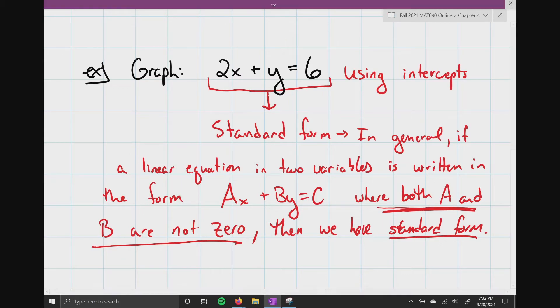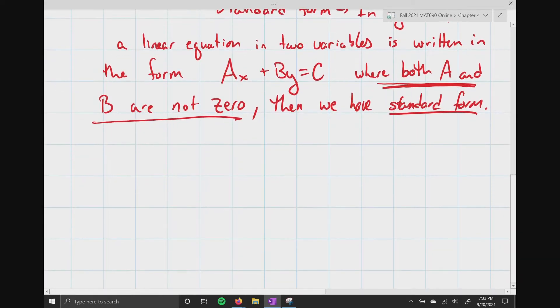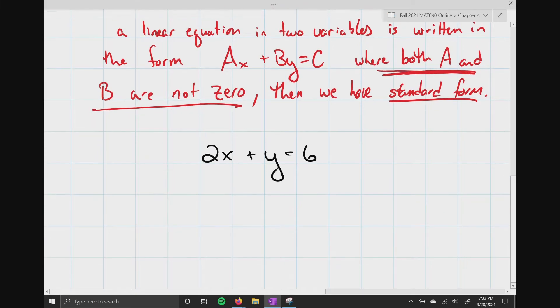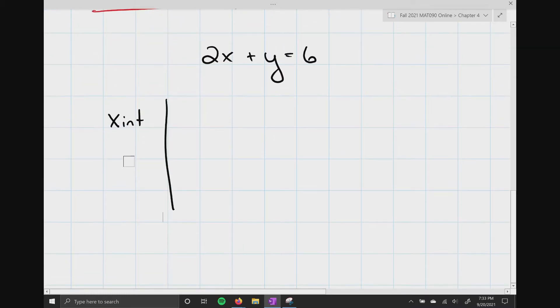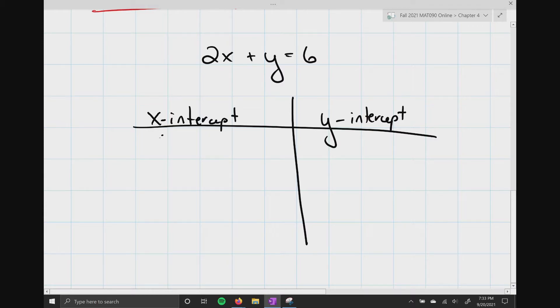So, back onto this. If I wanted to graph 2x plus y equals 6 using intercepts, watch how easy this is. Underneath, off to the left, I'm just going to write the x-intercept. Do like a little line here. Actually, I'm going to center it. Get myself some space. So, we've got the x-intercept, and then we've got the y-intercept. Now, remember, at an x-intercept, you're always going to have this point. It's going to look like this, x comma 0. But more importantly, we know y equals 0.